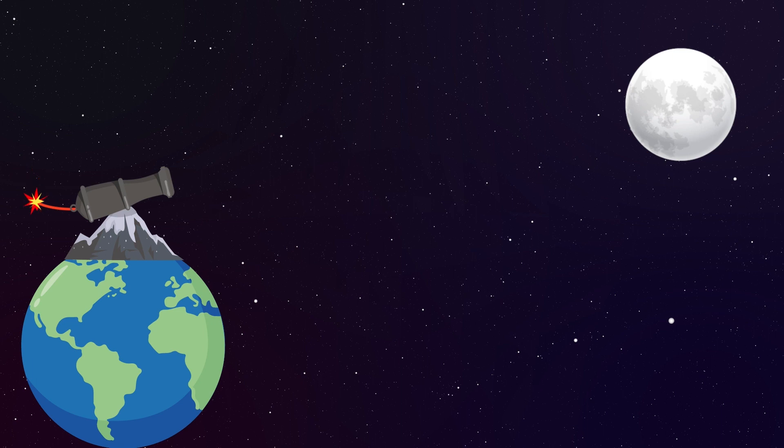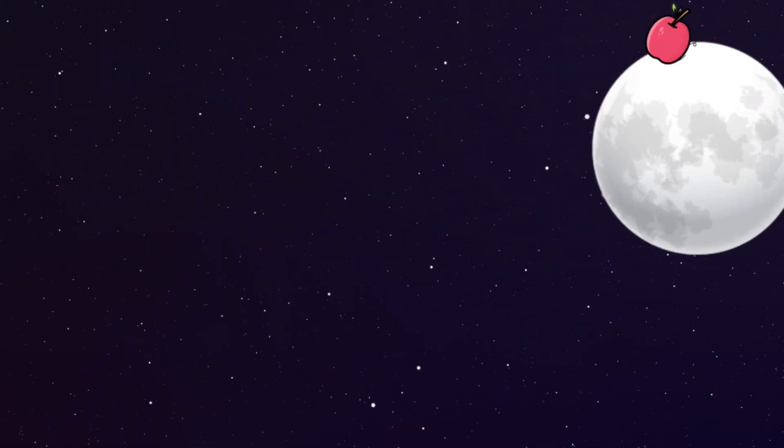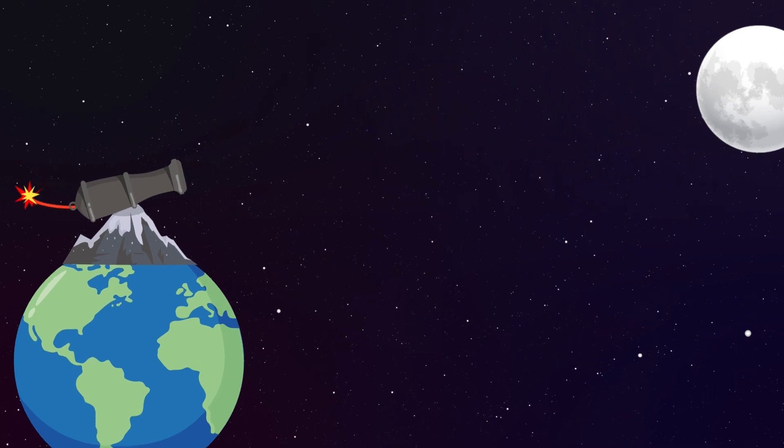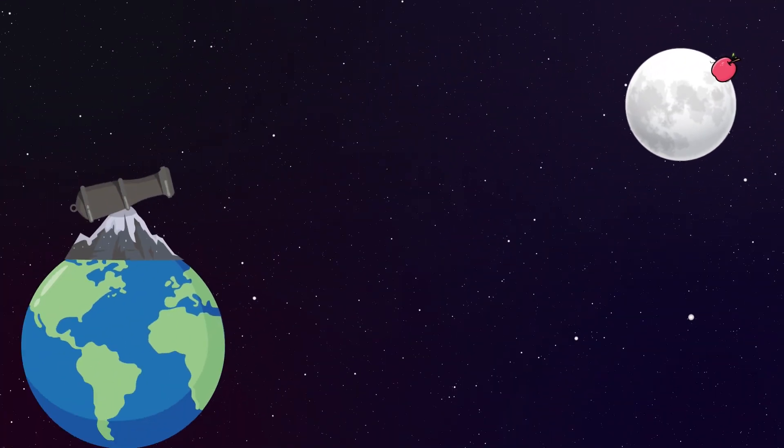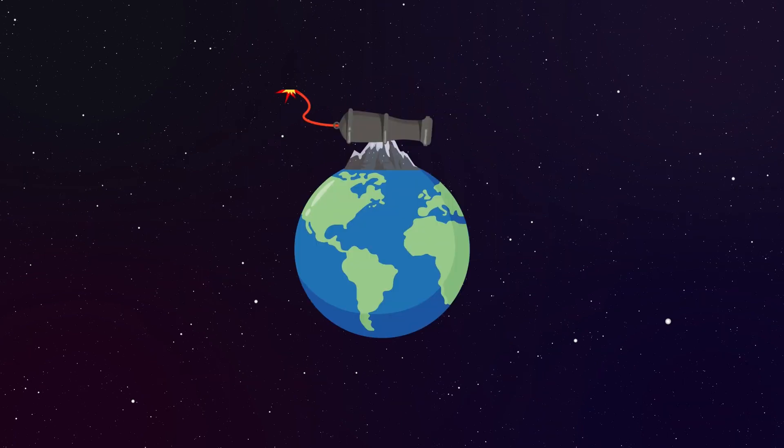If there were no force of gravitation and air resistance, when we shoot a cannonball with some velocity it would continue to travel in a straight line until it reaches the moon. However, because Earth has a gravitational pull, the cannonball would follow a curved path and fall back down to Earth.